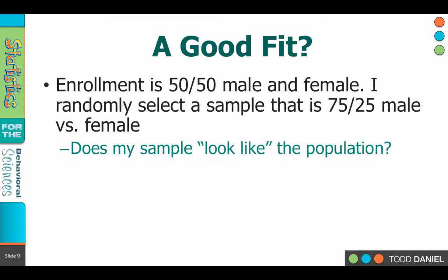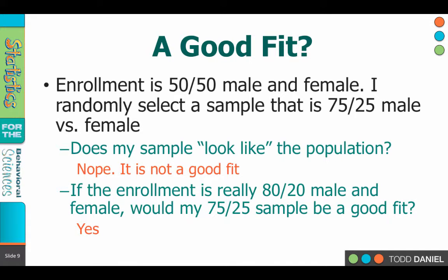Let's say that we have a college in which there is a 50-50 male-female enrollment. Now I do some kind of sampling and I find out that my sample has a 25-75 split with males and females. Is that a good fit? What you would expect is that any sample would have a 50-50 split of male-female. Does the 75-25 split fit? Does it look like the population? No, that's not really a good fit. But assuming that you had an 80-20 split of college students, then your 75-25 sample would fit pretty good — that would be a good fit.